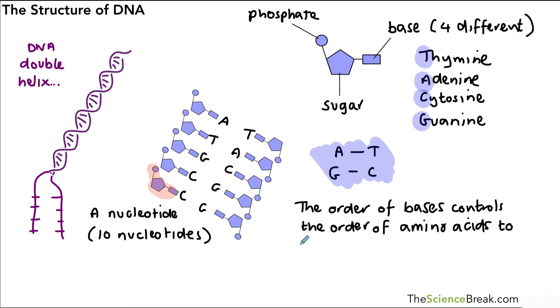So the order of those bases will control the order of amino acids that the cell will assemble them in, or will control the order which the cell puts those amino acids together. And as we know, the amino acids join together to make a particular protein.